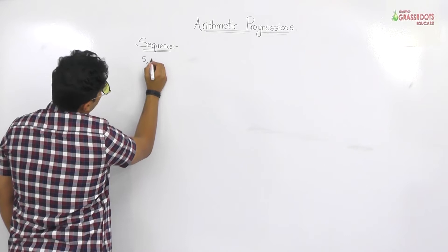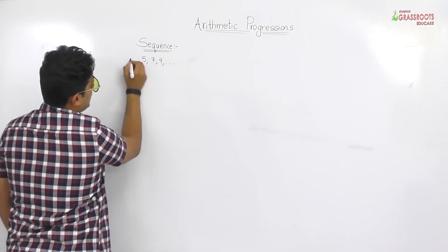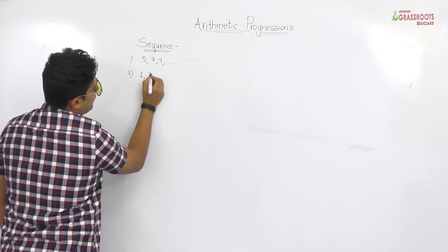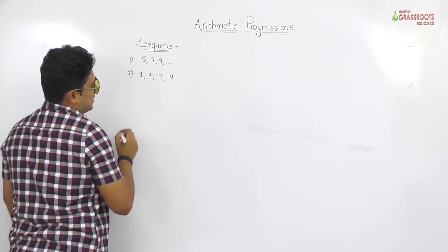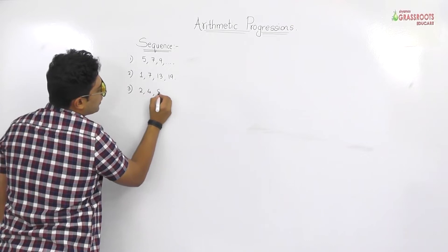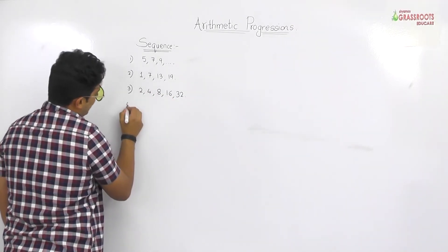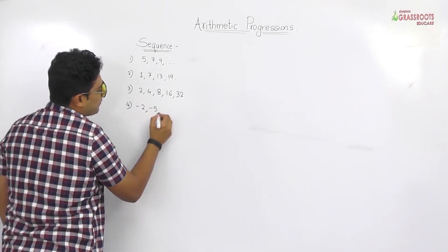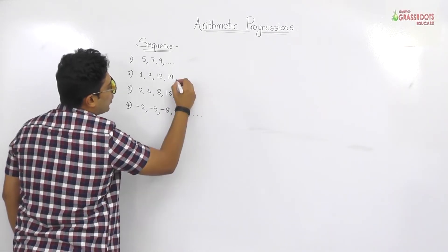First example: 5, 7, 9 and so on. Second example: 1, 7, 13, 19 — that's it. Third: 2, 4, 8, 16, 32 — that's it. Last example: minus 2, minus 5, minus 8, minus 11 and so on.